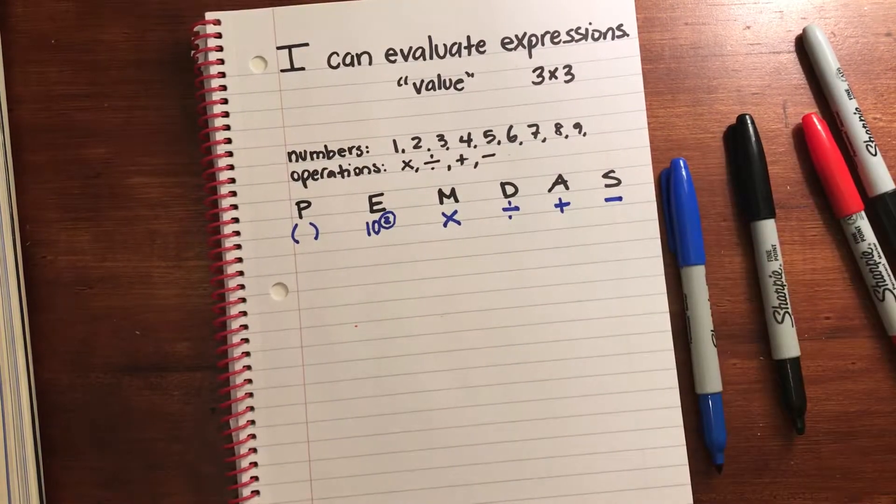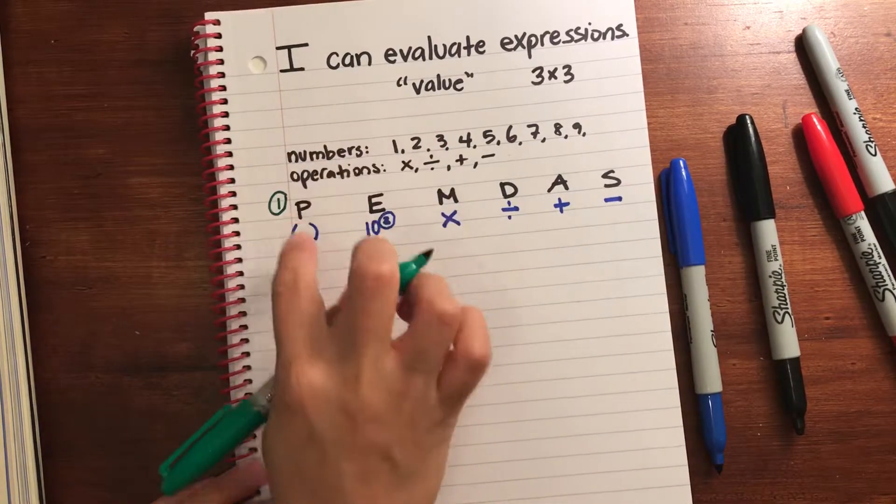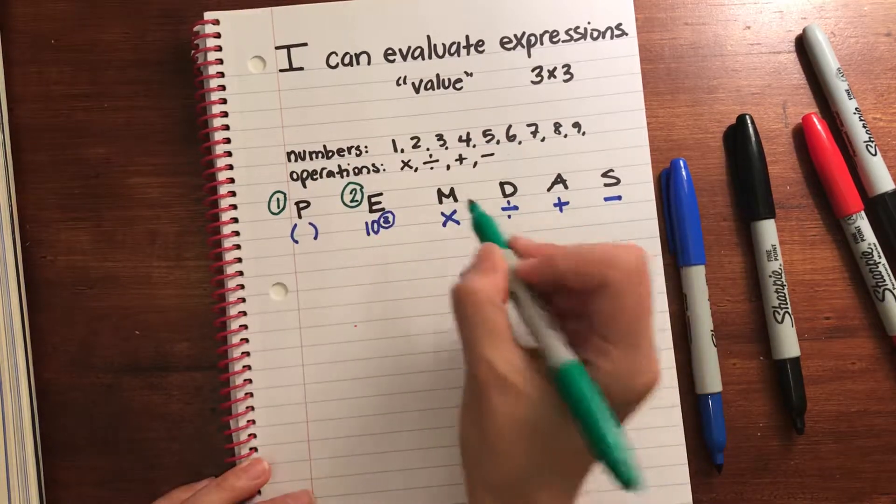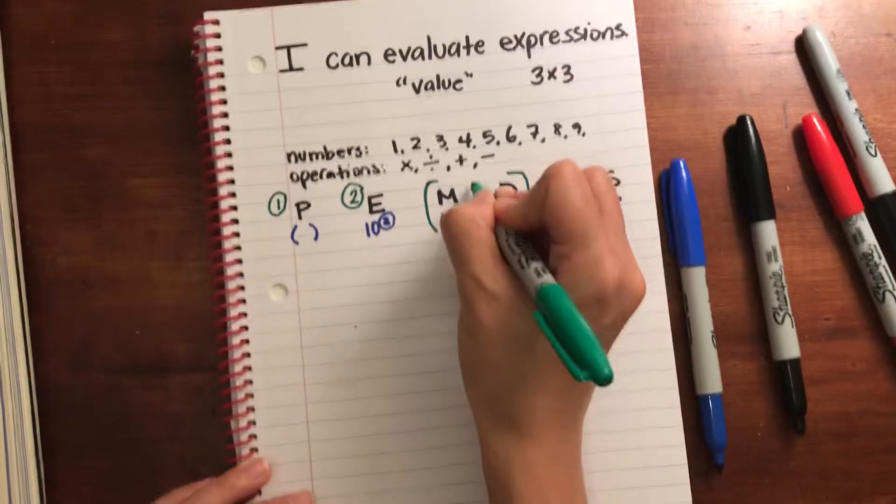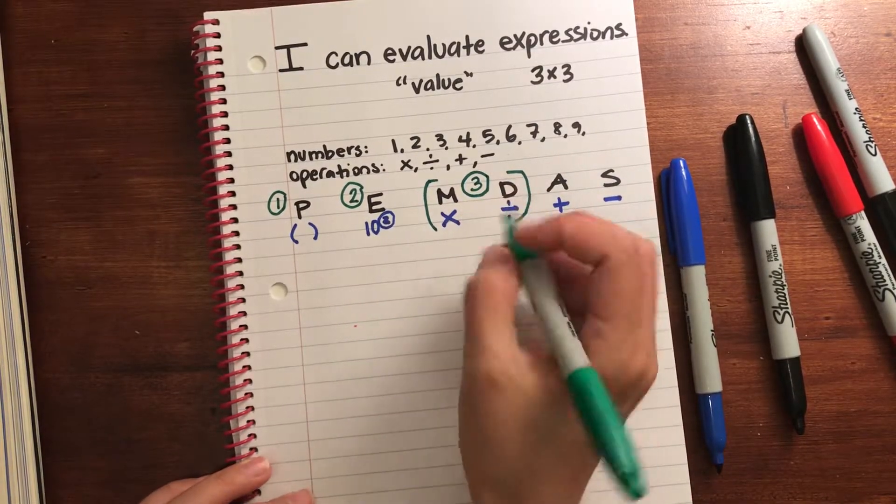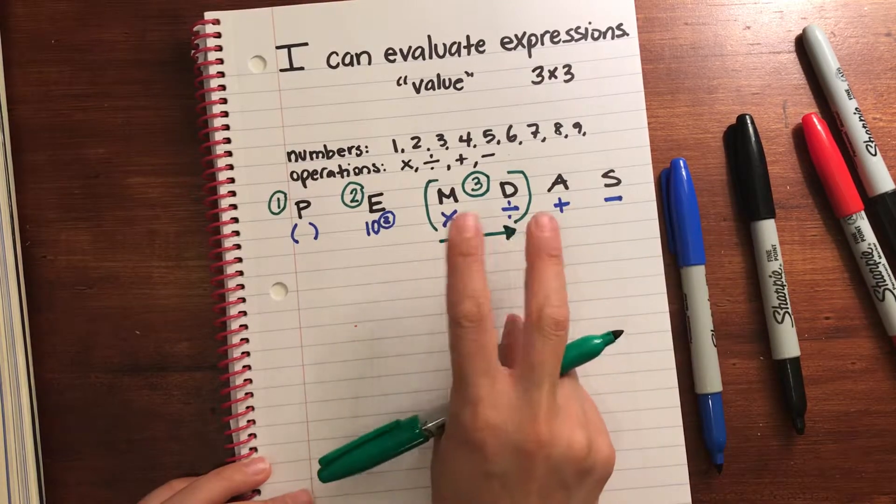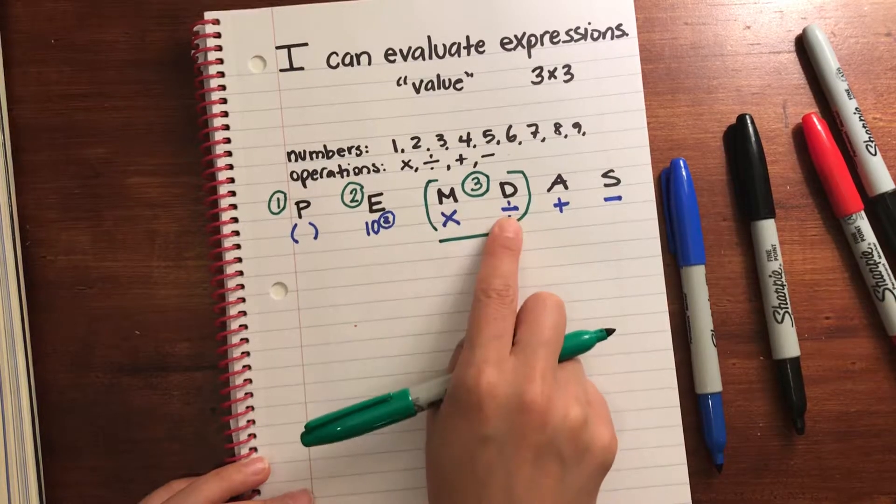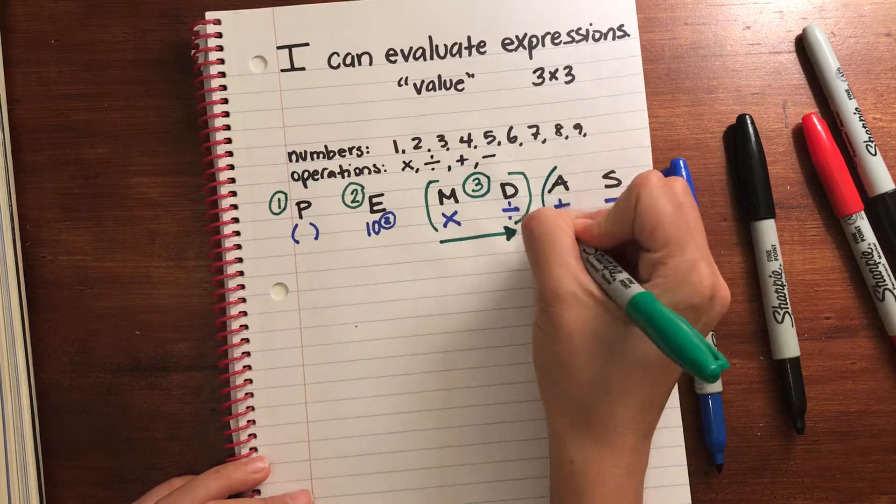Now one thing to consider, which is very important, is the first thing you always evaluate are parentheses. The second are exponents. Multiplication and division are actually in the same grouping. They're third. The only way to see which one comes first, if you have multiplication and division, you start from left to right. If division is here and multiplication is here, you do division first because it's further left.